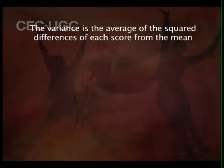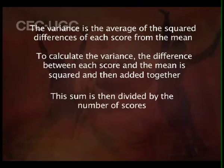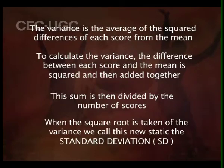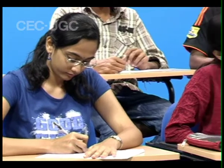Now we will discuss variance and standard deviation. Variance is the average of the squared difference of each score from the mean. To calculate the variance, the difference between each score and the mean is squared and then added together; this sum is then divided by the number of scores. When the square root is taken of the variance, we call this new statistic the standard deviation. Unlike range, standard deviation takes all the values into the calculation.